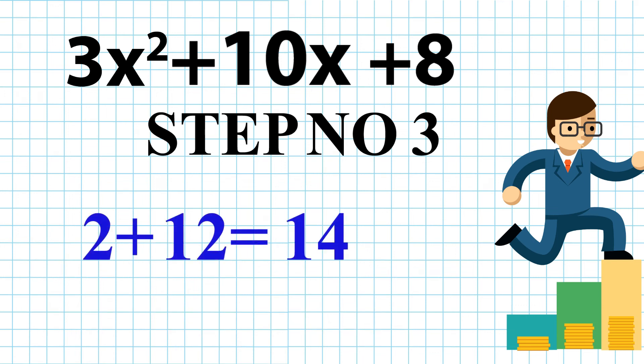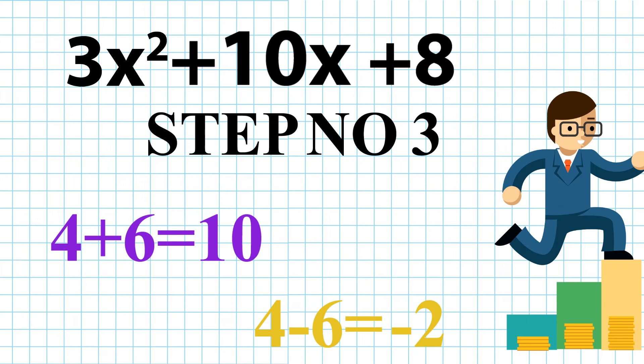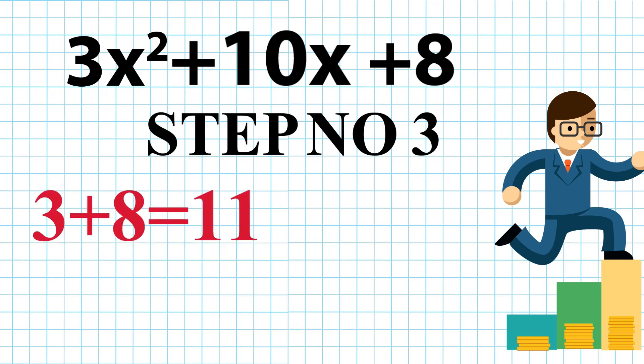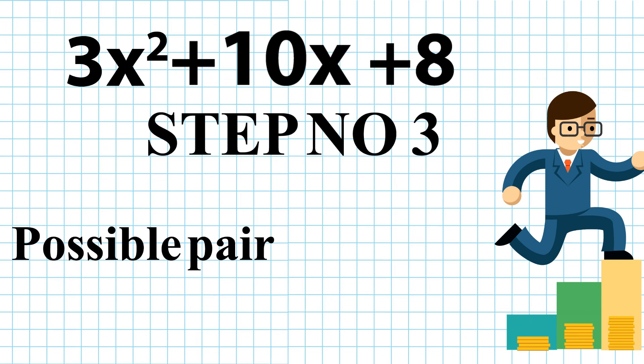2 plus 12 gives us 14. 2 minus 12 gives us minus 10. 4 plus 6 gives us 10. 4 minus 6 gives us minus 2. 3 plus 8 gives us 11. 3 minus 8 gives us minus 5. So, the best possible pair is 4 plus 6.